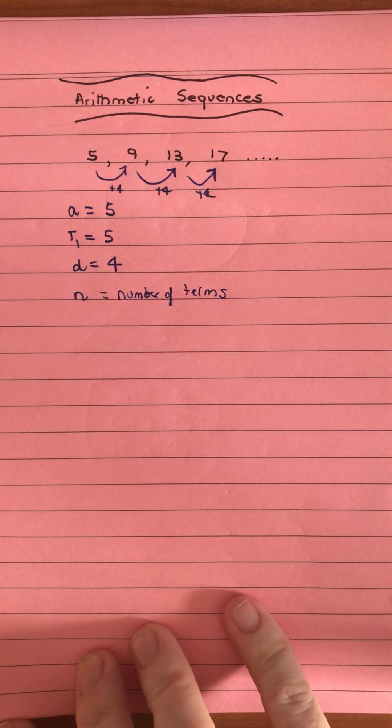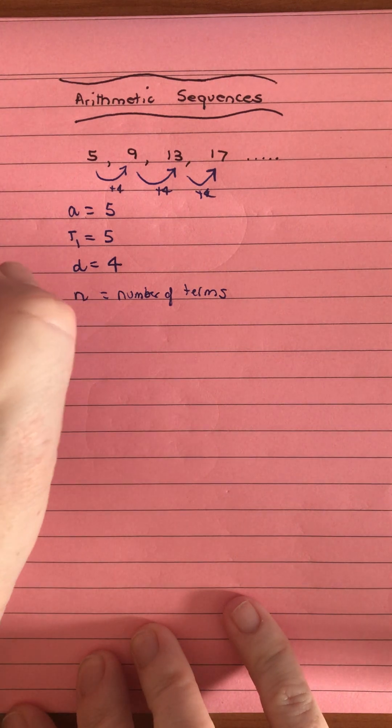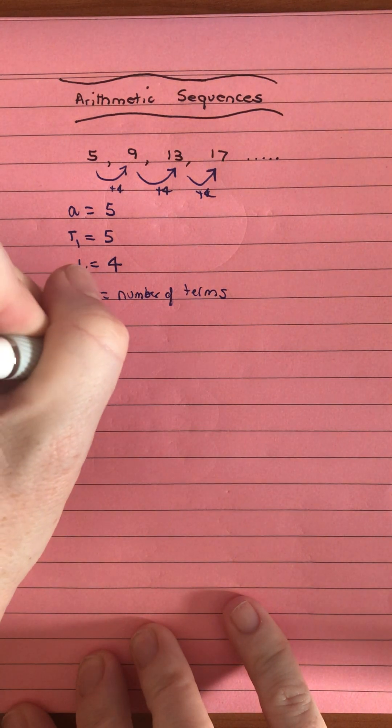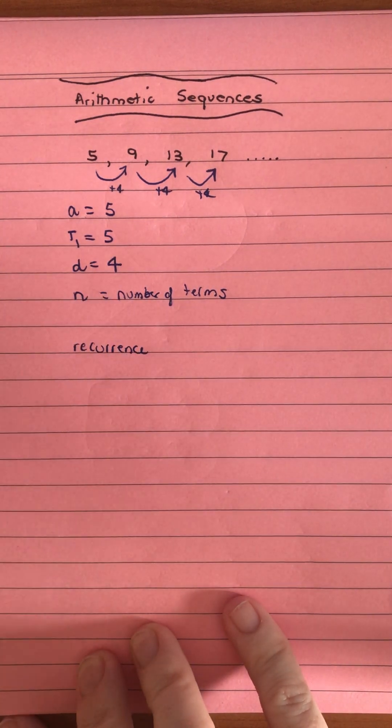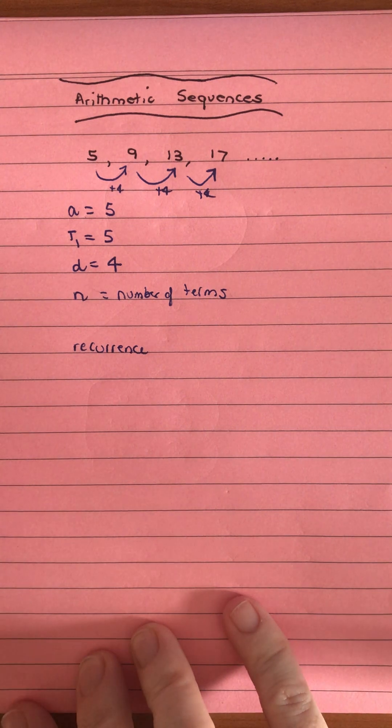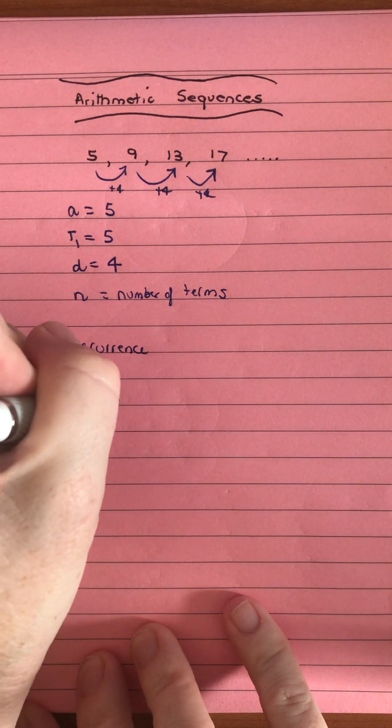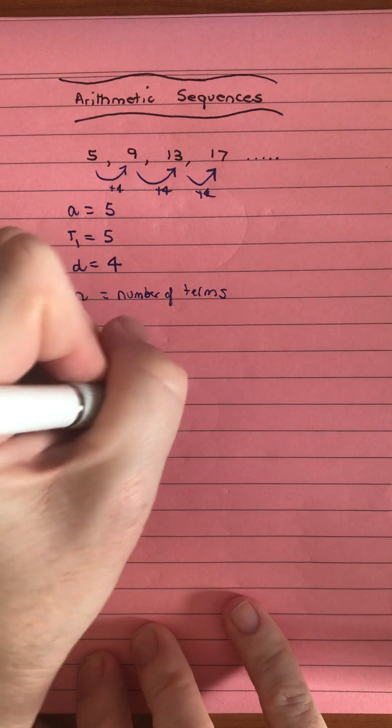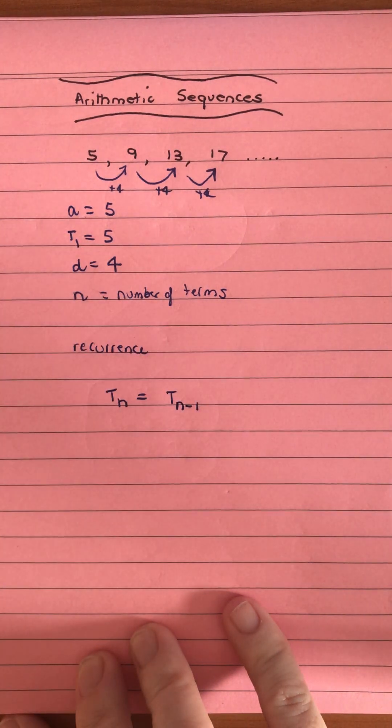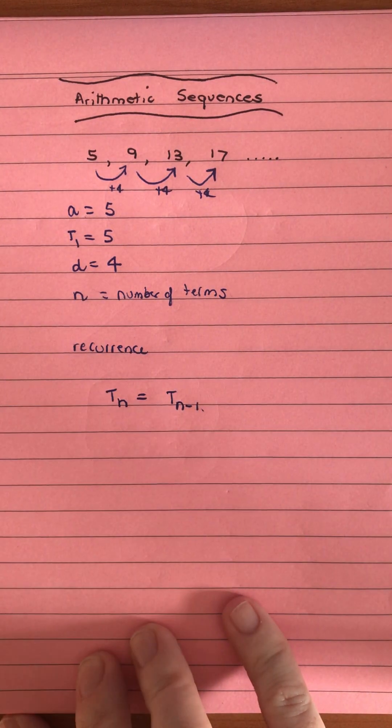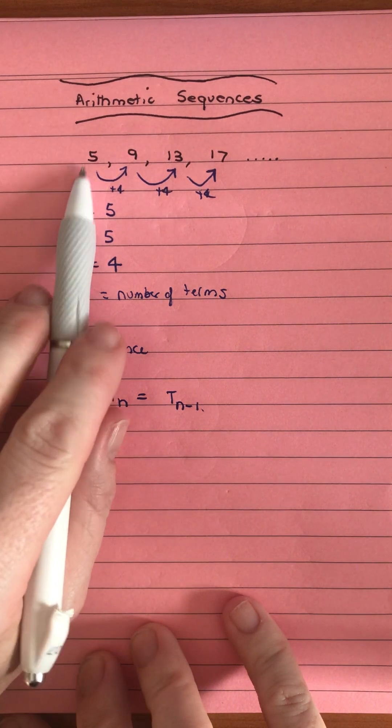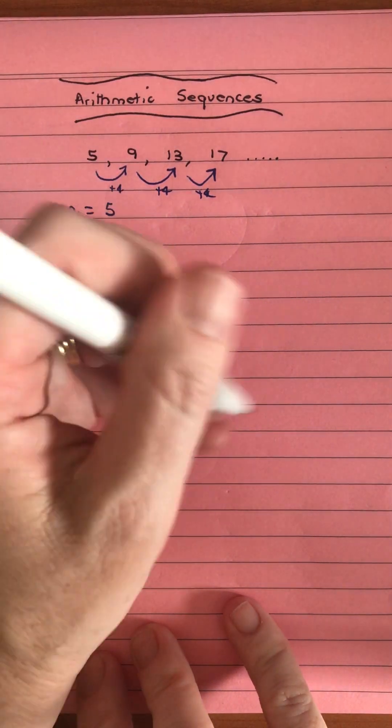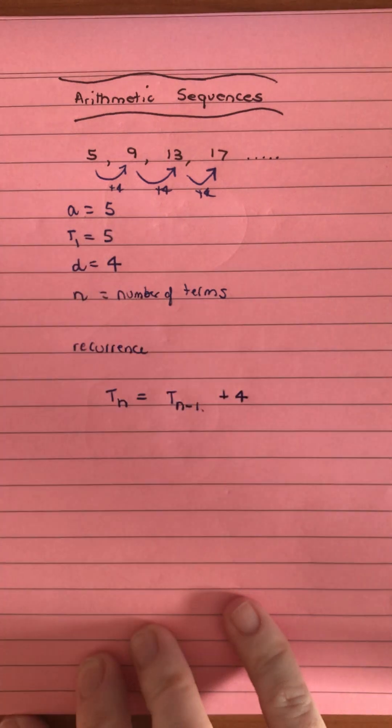We have two ways to describe an arithmetic sequence. We can use the recurrence relation, which says how to get to the next value by knowing the current one. We can say T_n equals the previous term plus what you add to it. That's why we write n minus 1, referring to the one before. In this example, to get to the next term, we add 4 to the previous term.